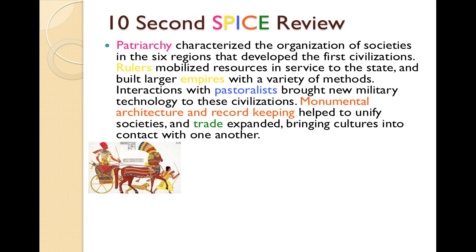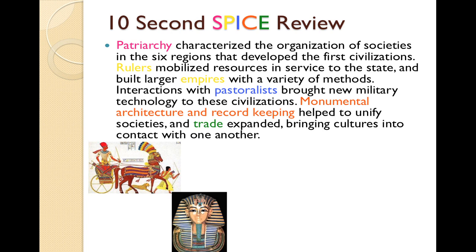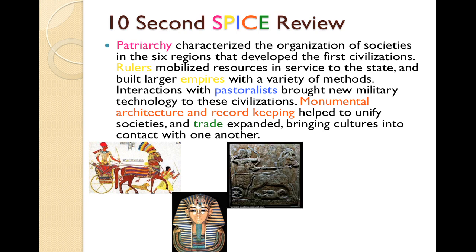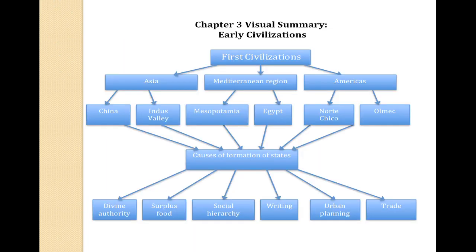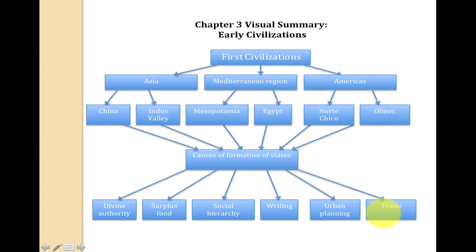Reviewing the SPICE themes of the chapter: patriarchy characterized the organization of societies in all six regions that developed the first civilizations. Rulers mobilized resources in service to the state and built larger empires with a variety of methods. Interactions with pastoralists brought new military technology. Monumental architecture and record keeping helped to unify societies, and trade expanded bringing cultures into contact. The six first civilizations — China, Indus Valley, Mesopotamia, Egypt, Norte Chico, and the Olmec — shared similar causes for forming, including divine authority, a surplus of food, social hierarchy, a system of writing, urban planning and urbanization, and increasing trade connections. That's the Chapter 3 overview — happy reading.